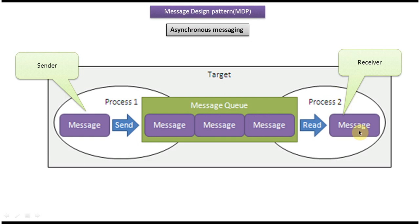Until the receiver is ready to process the message, the message queue holds all the messages. After some point in time, the receiver comes and is ready to process. It will check the message queue and take messages one by one, processing them one by one. The output of those messages is then sent back to the sender sometime later. This is how asynchronous messaging works — the sender sends the message, the queue holds it, and the receiver takes it from the queue and processes it when ready.